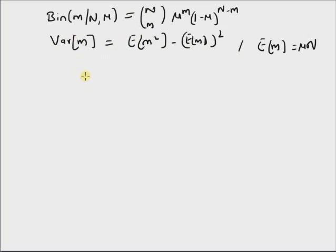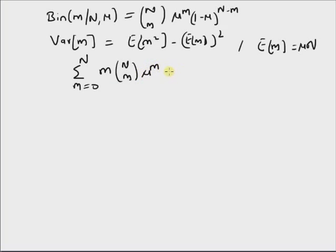Let us start with the definition of the mean value: summation m equal to 0 to n, of m times the binomial distribution, that is n choose m times mu to the power m times 1 minus mu to the power n minus m, is equal to mu times n. This relation was already derived in a previous video.